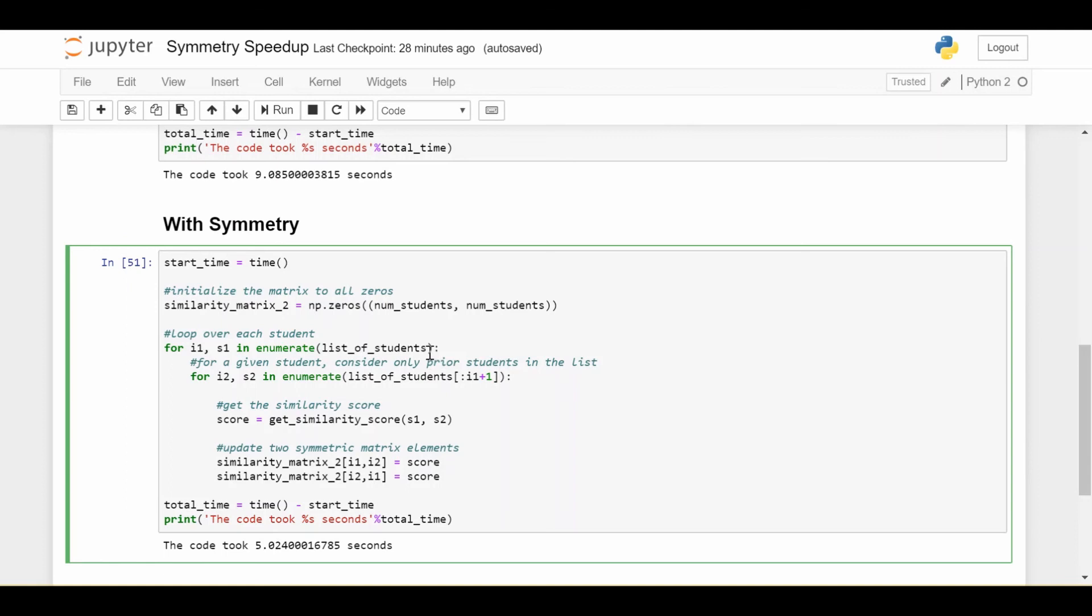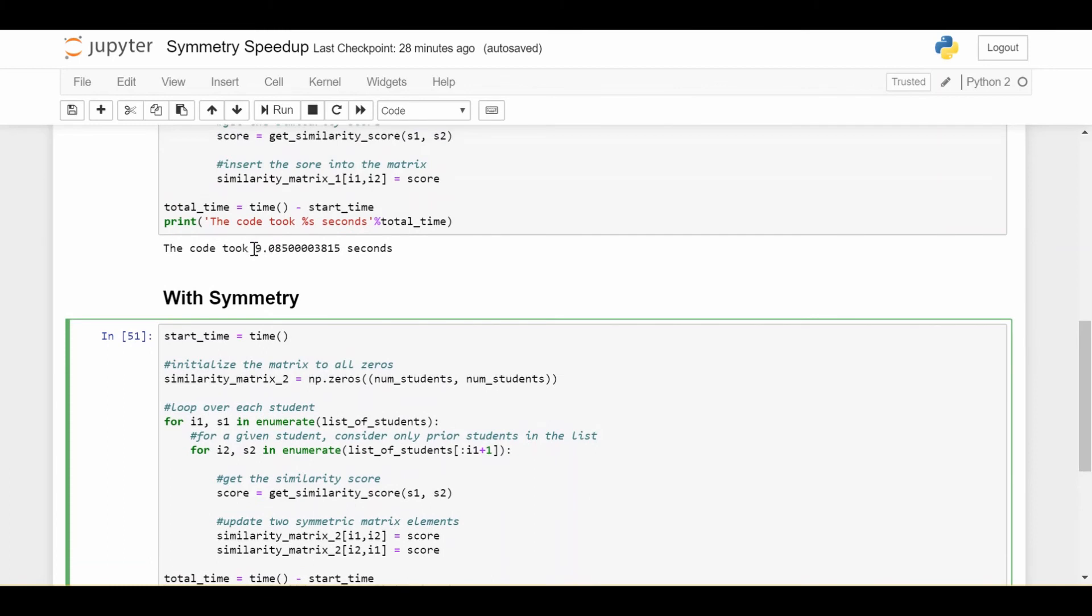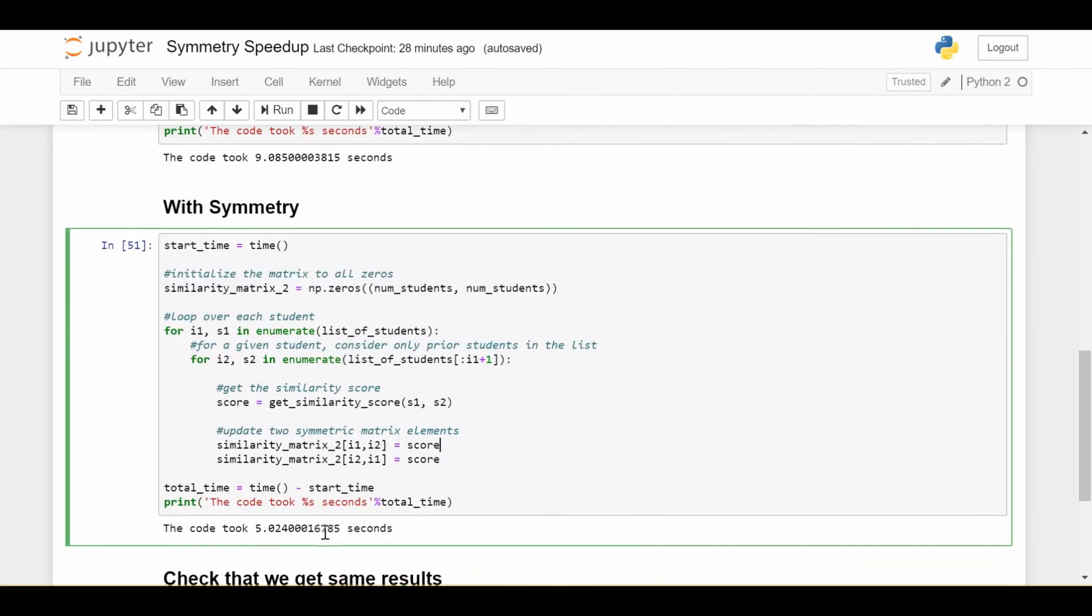So the question I might be asking is, we definitely got four seconds faster, but why is it not like exactly half, right? Because if it was half of nine, it would be like 4.5, but it's five. So where are those lost 0.5 seconds? So remember, we're not doing exactly half the work. The diagonal still has to be done no matter what. In fact, you know what? You could argue the diagonal doesn't have to be done because the diagonal is just students' similarity scores with themselves, which is obviously going to be one because you can't get more similar than yourself.